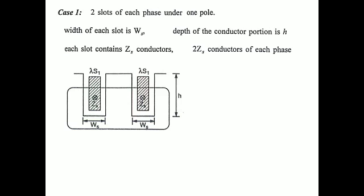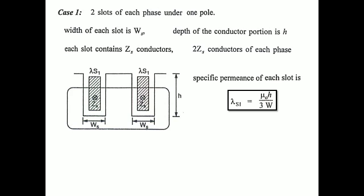In the diagram, one pole is formed by two slots. Ws represents the slot width for the two slots, H represents the depth of the two slots, Zs is the slot conductors, and 2·Zs is the value per phase. One more parameter is lambda — the specific permeance of each slot. Permeance is the inverse of reluctance; here it is declared as lambda (previously denoted as P). Lambda_s1 = μ₀·H / (3·Ws).